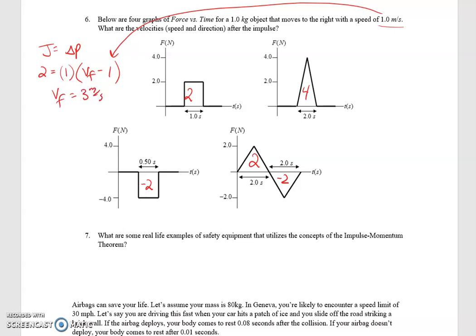Next one, impulse equals change in momentum, so 4 equals mass of 1, final velocity minus initial velocity. Solve for VF, 5 meters per second, also to the right.